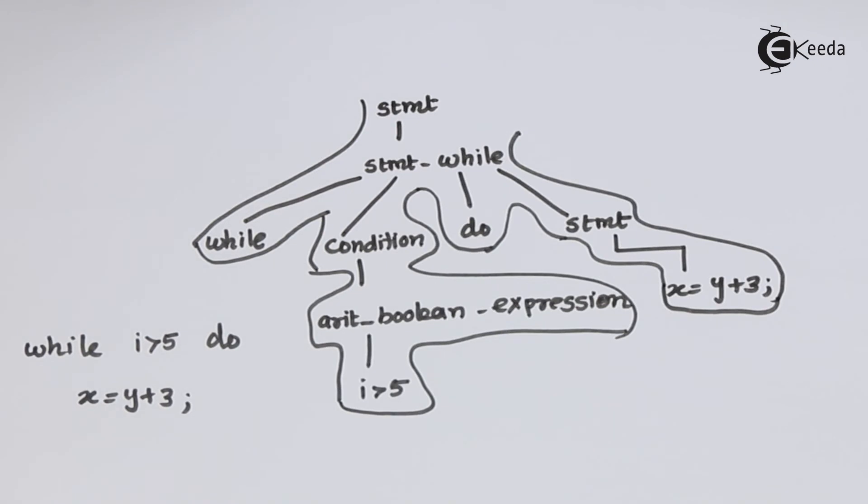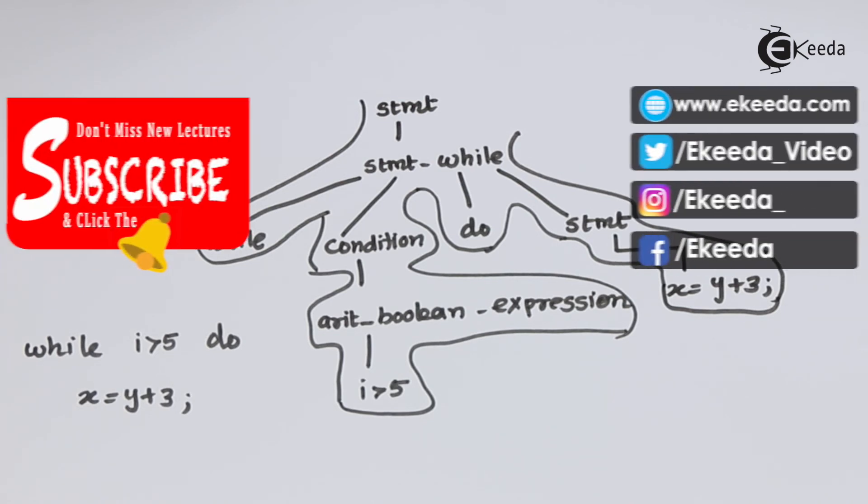You will see that the yield of the parse tree is the program which we wrote earlier. That means the program is according to the grammatical syntax which was written earlier for while loop. Having done with while loop, now we will write a programming construct for do while loop and for loop in the coming up video.